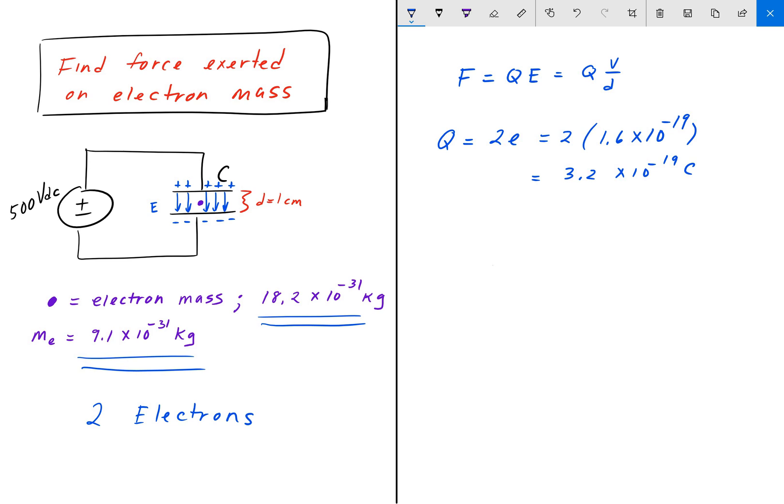Now we can just plug all that in and solve for the force. So force is equal to this Q. We have 3.2 times 10 to the negative 19, multiplied by 500 V, divided by one centimeter, so one times 10 to the negative 2.